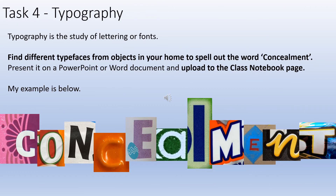The fourth task is to find objects in your home that have typography on them — for example, food packaging, books, magazines, newspapers — and you're going to find letters to spell out the word 'concealment'. You'll need to do a bit of zooming in and cropping to make the word happen. When you present it, try to present it as the whole word.